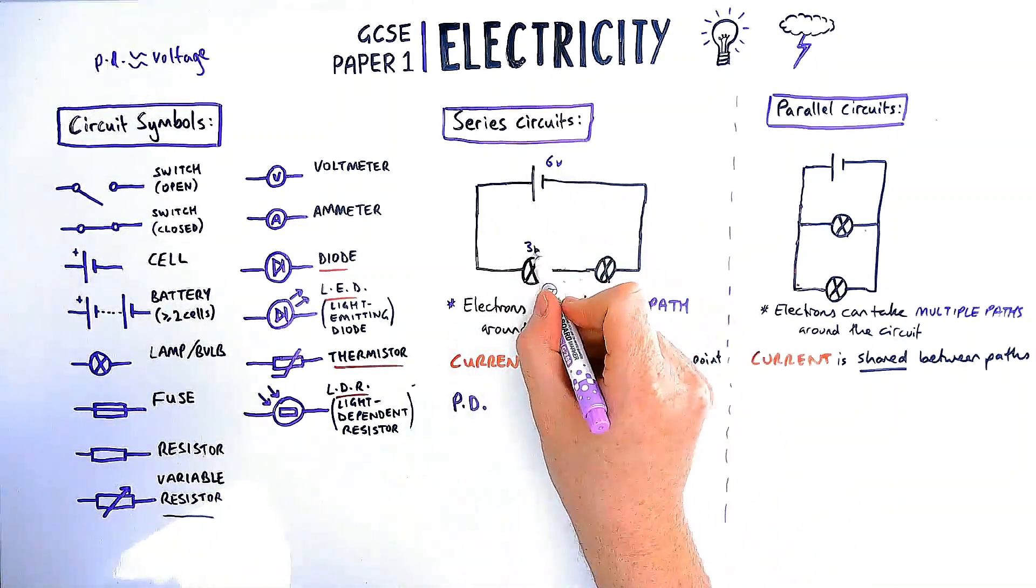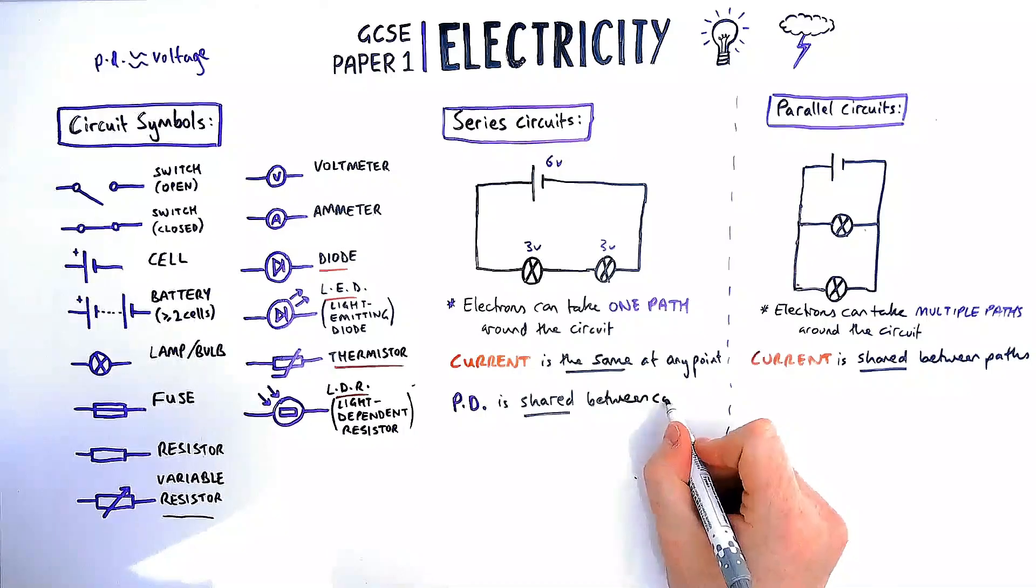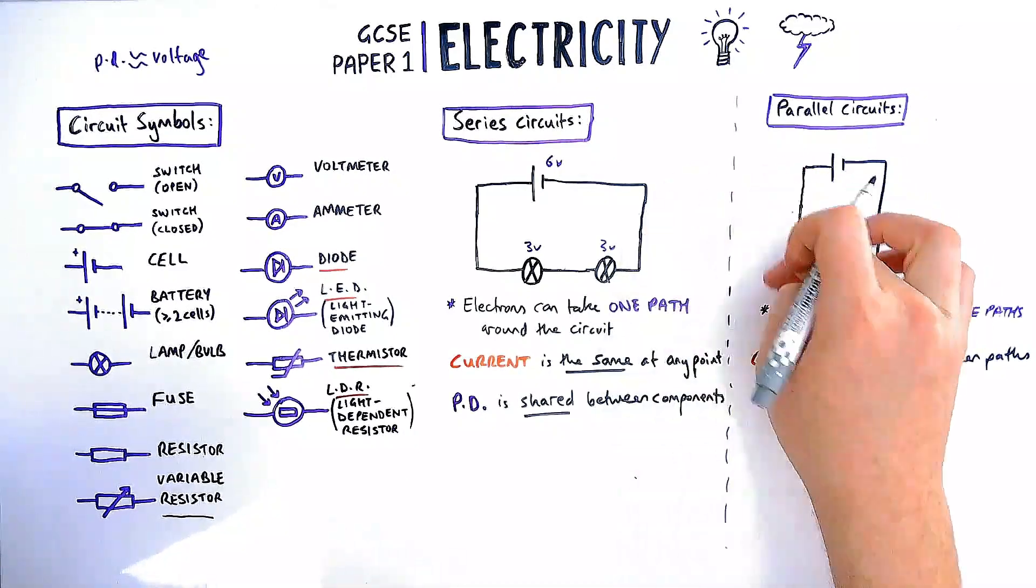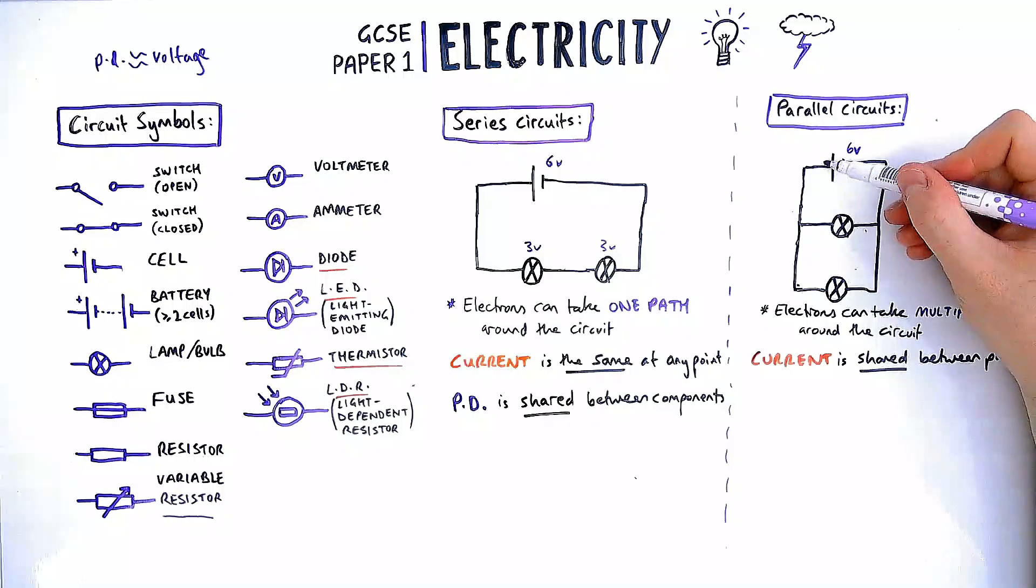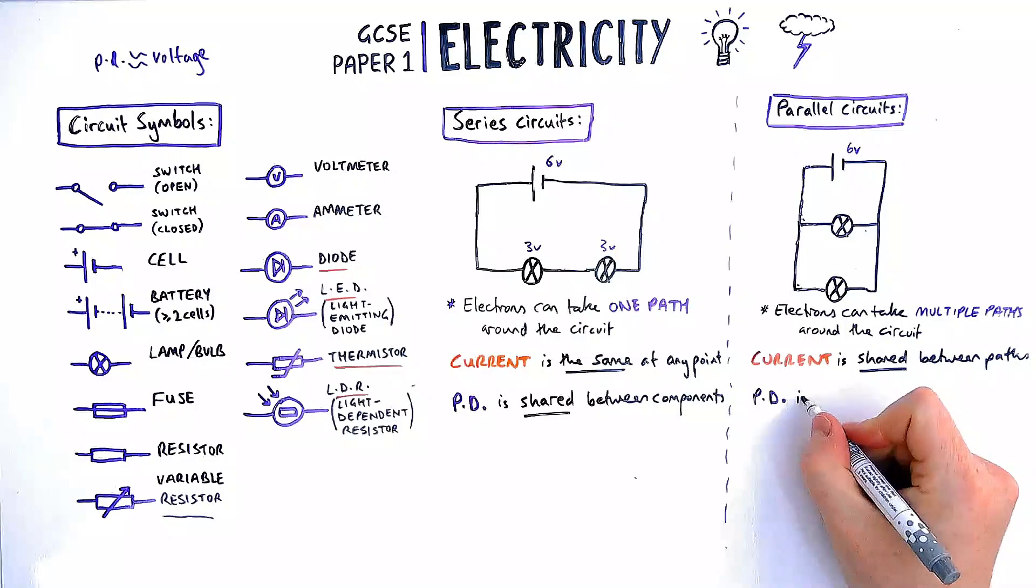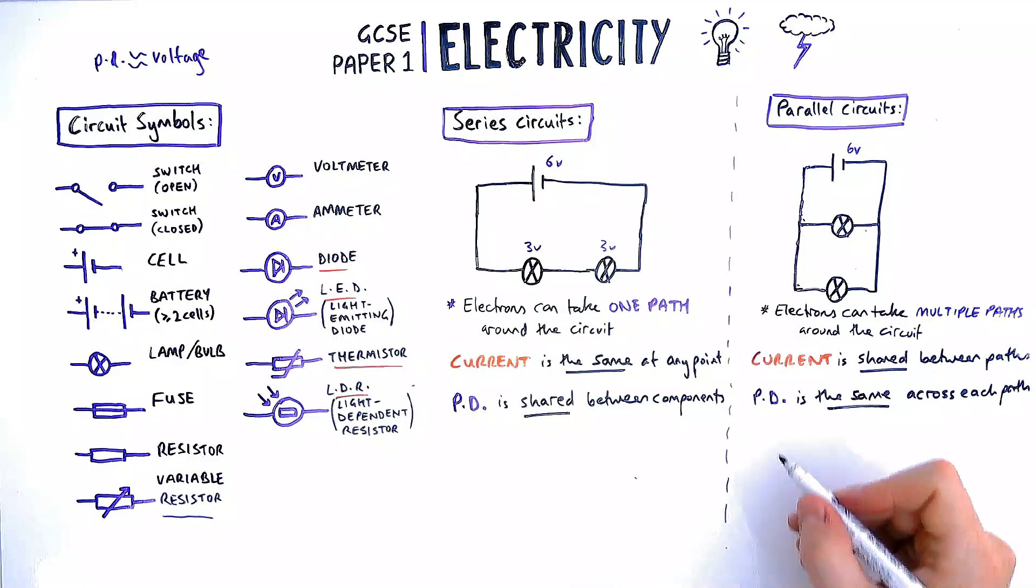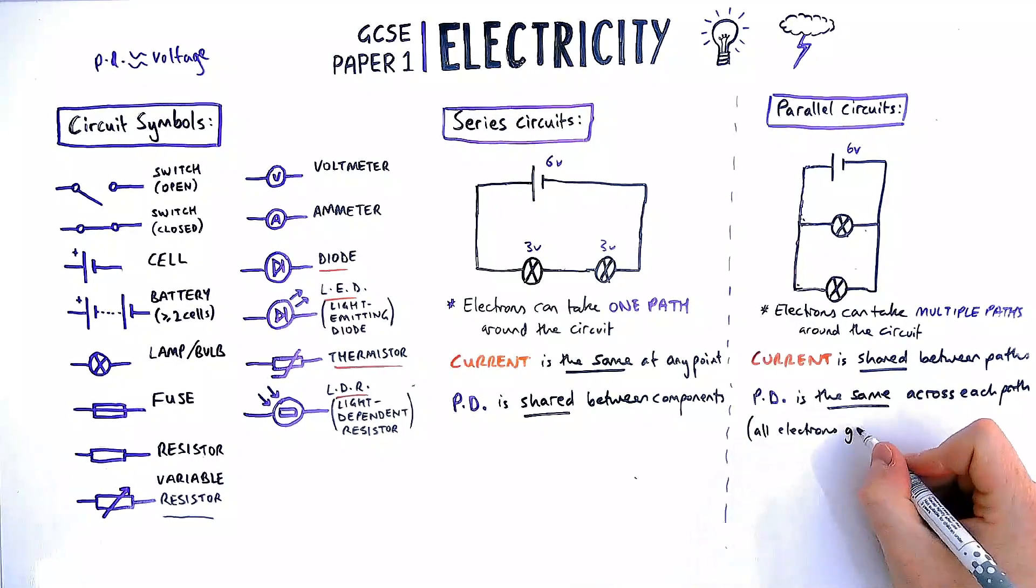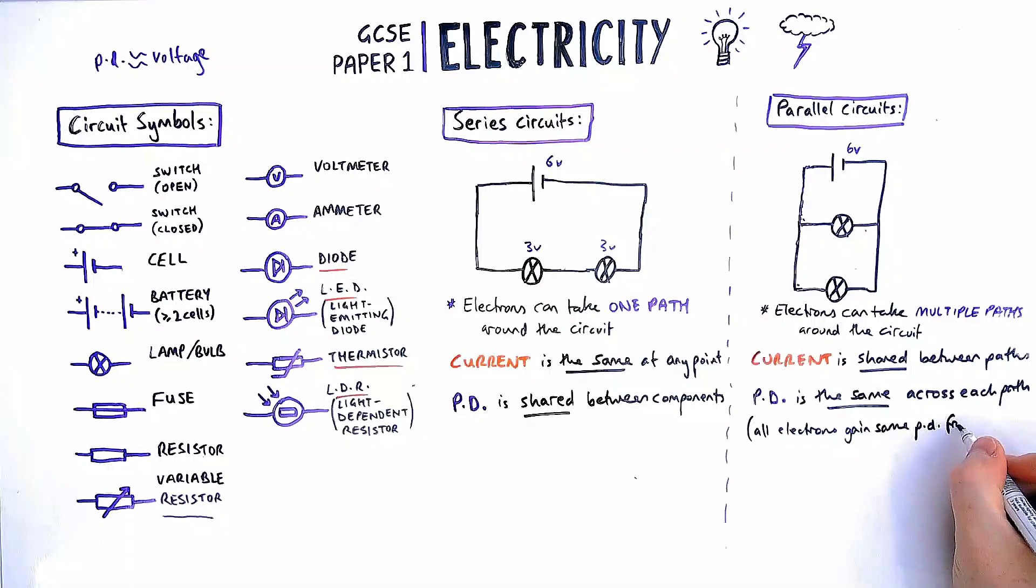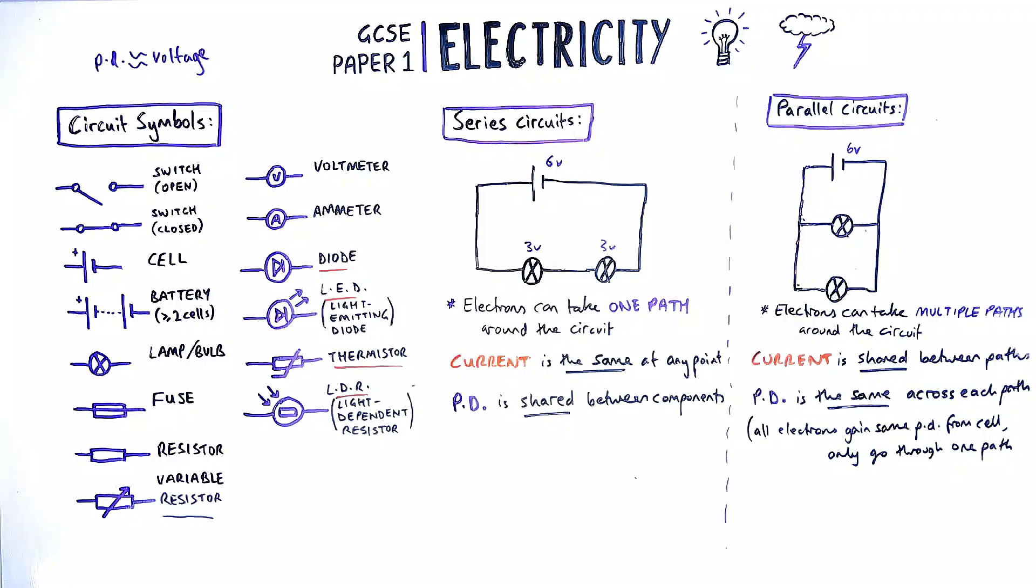Let's look at potential difference. In a series circuit, this is shared between components, meaning if I use three volts of six volts at one bulb, I'm going to have three volts left for another bulb. They don't have to be equal, in this case they are. Potential difference in a parallel circuit is the same across each path. The reason for this: if it's six volts at the battery, each electron gains six volts. As the electrons go around the circuit, they either travel through the first path or the bottom path. None of them travel through both, so they give up six volts of energy per unit charge to their component and then go back to the battery.